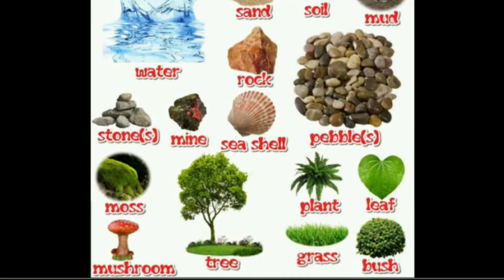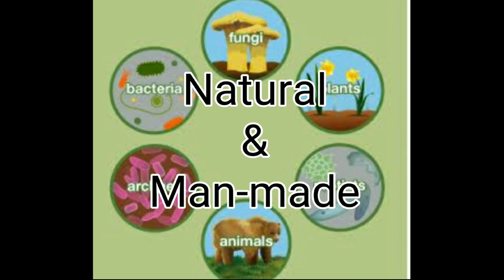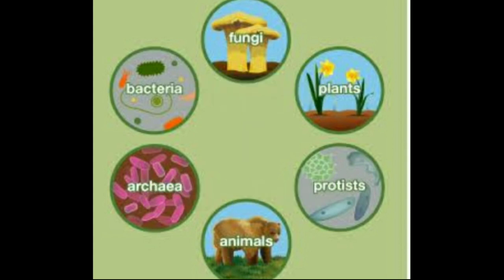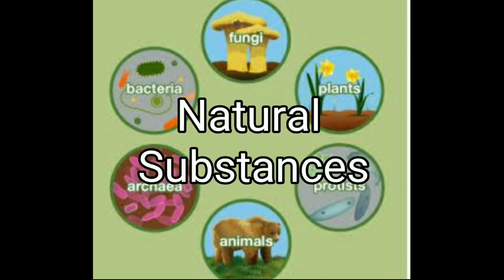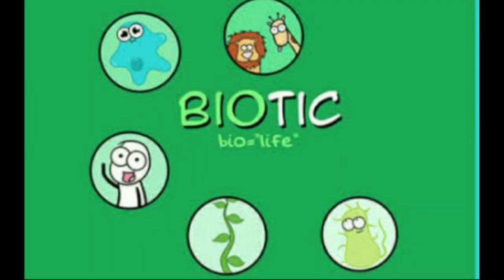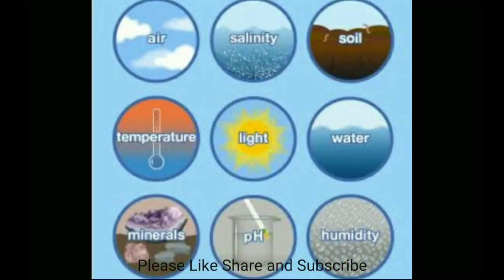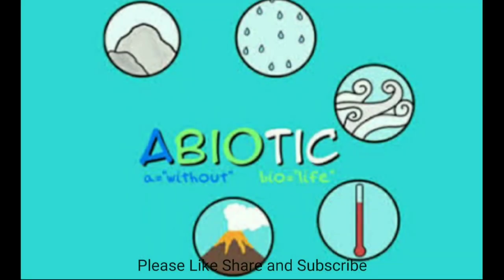Natural Substances. Substances available in nature are called natural substances. Of these, substances of the first group are obtained from living things and are called biotic substances. Air, soil, and water are substances that are not obtained from living things; they are called abiotic substances.